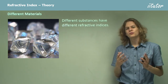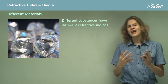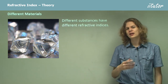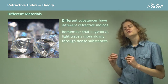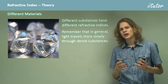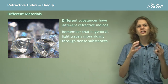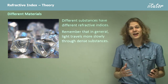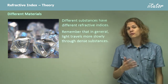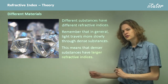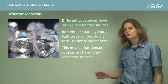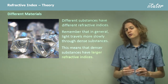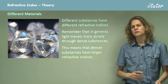Different substances have different refractive indices — just from water and air we see a difference between 1 and 1.33. Other substances can have even higher refractive indices. In general, light travels more slowly through denser substances. A transparent solid tends to be denser than a transparent liquid, so light travels more slowly through it. In a gas light travels even faster, and in a vacuum fastest of all. Denser substances, especially solids, have larger refractive indices, since a large refractive index means light travels very slowly.